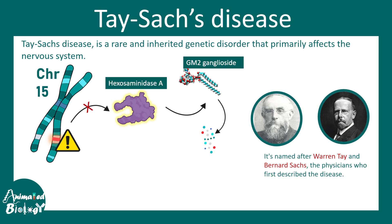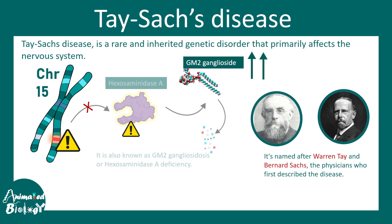When this enzyme is not produced due to the mutation, or there is a reduction in its production, GM2 ganglioside doesn't break down — catabolism of GM2 ganglioside is abrogated. This leads to an increase in GM2 ganglioside in the neuron, which is causal for Tay-Sachs disease. That is why this disease is also known as GM2 gangliosidosis or hexosaminidase A deficiency.